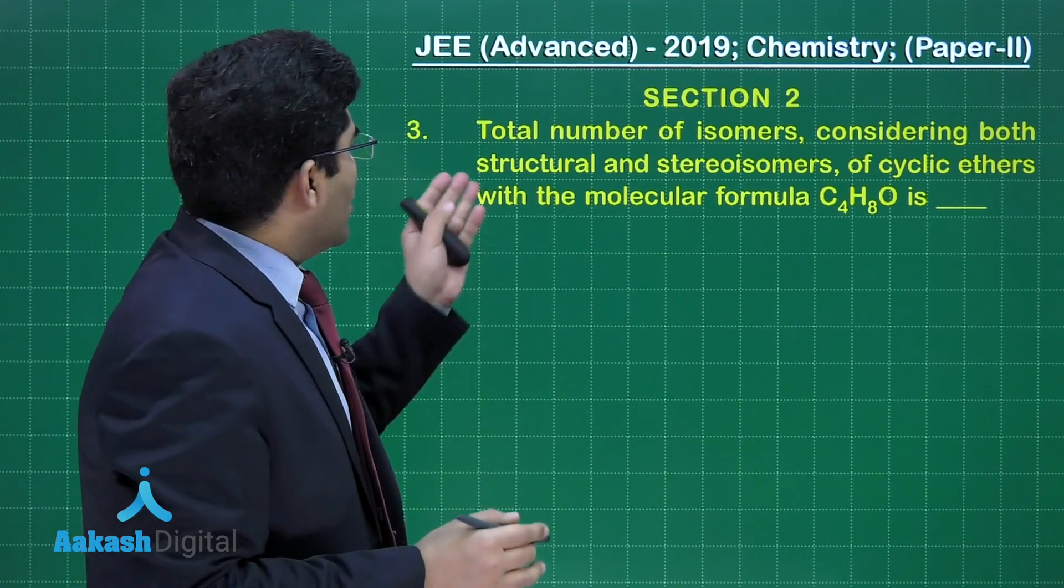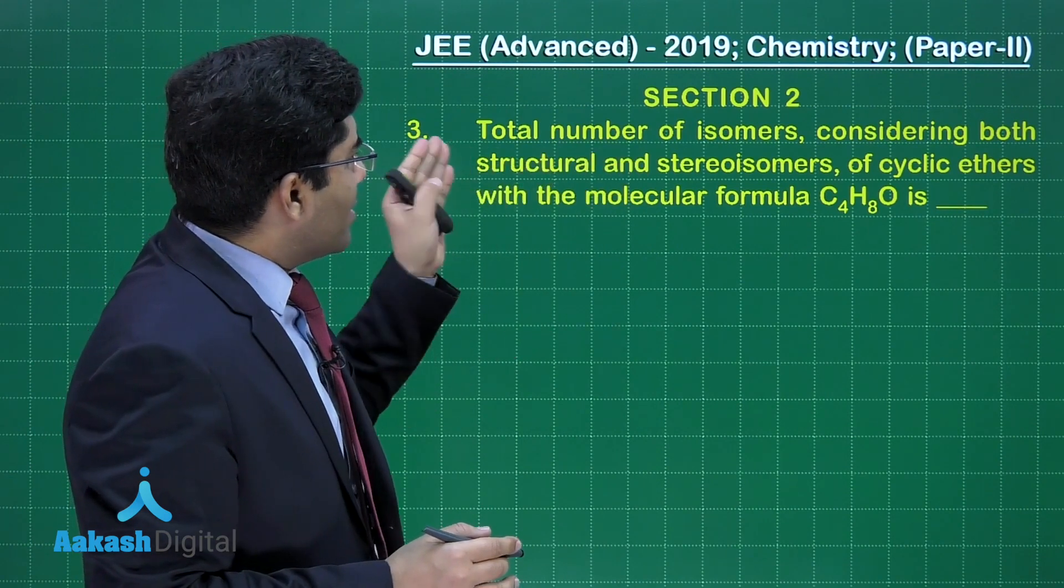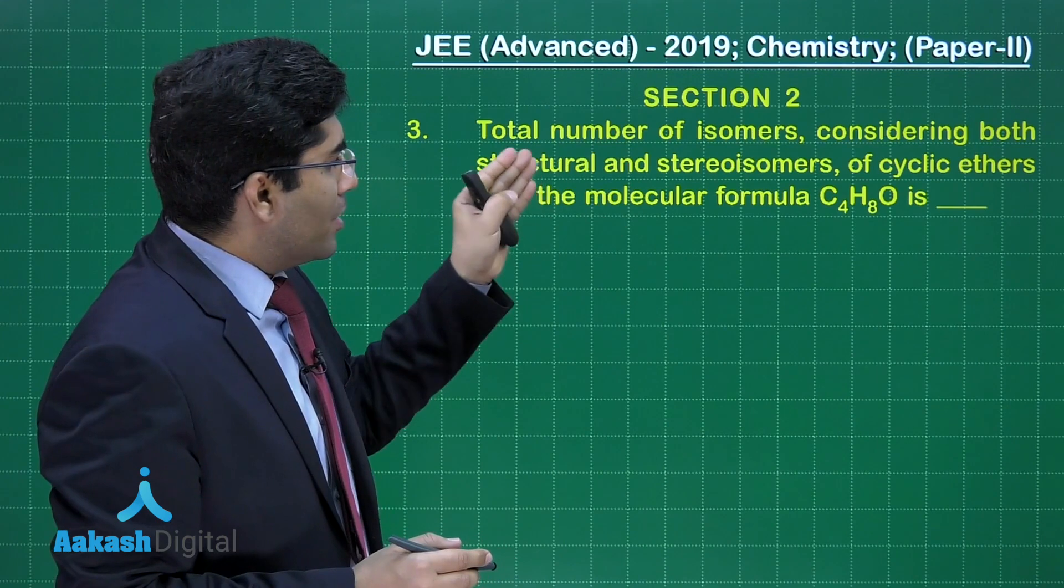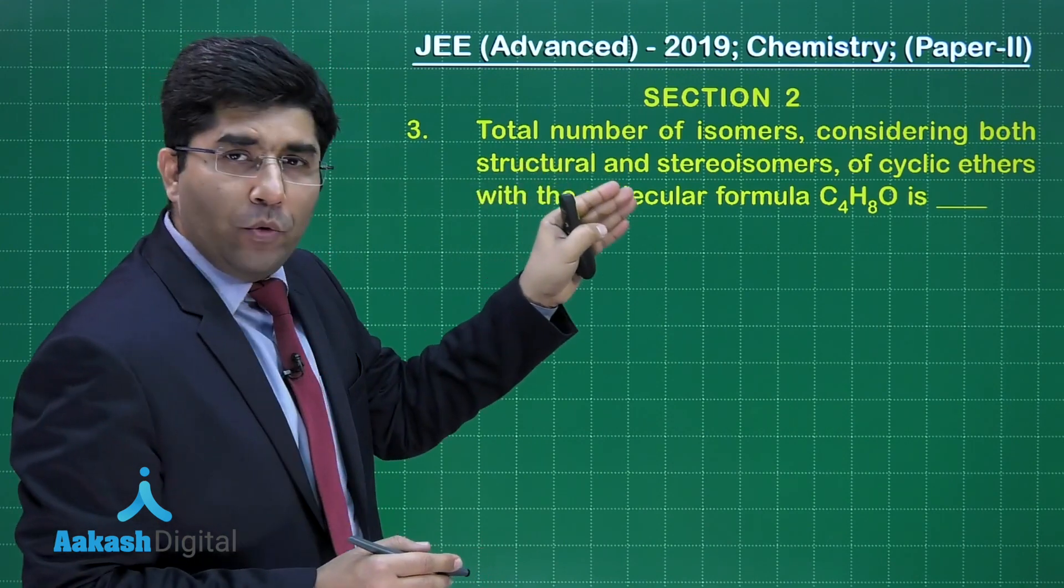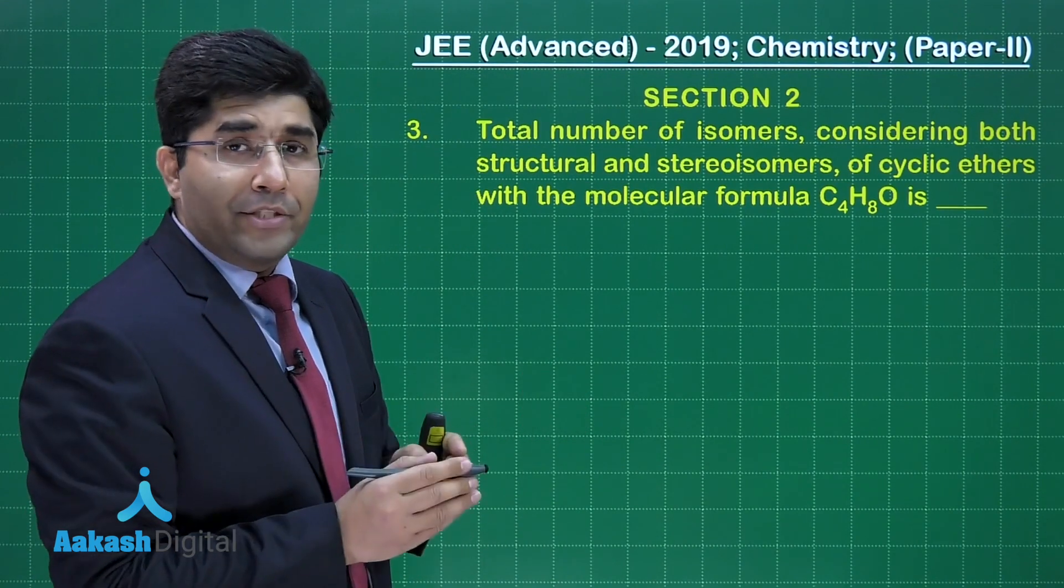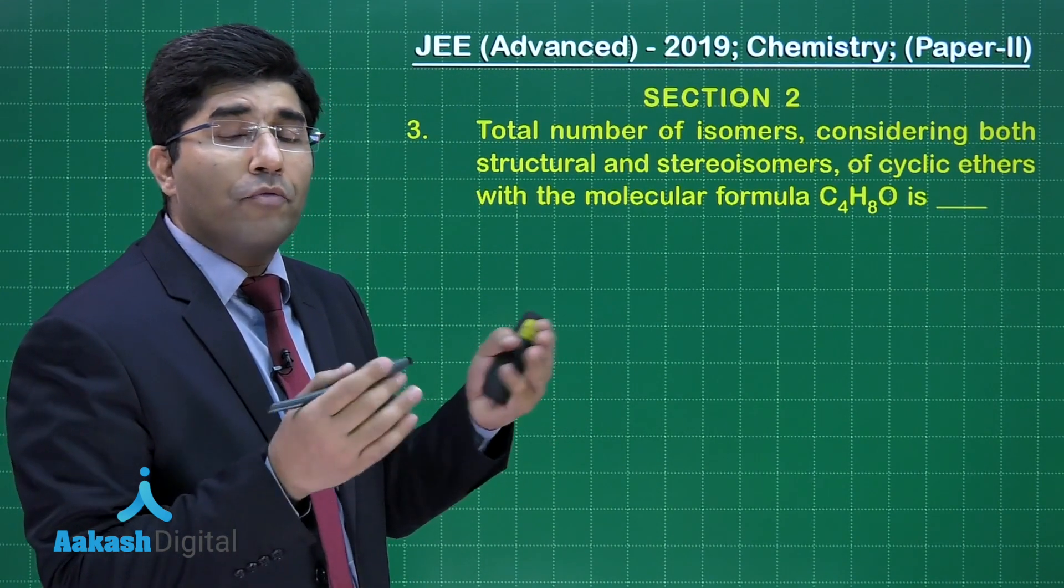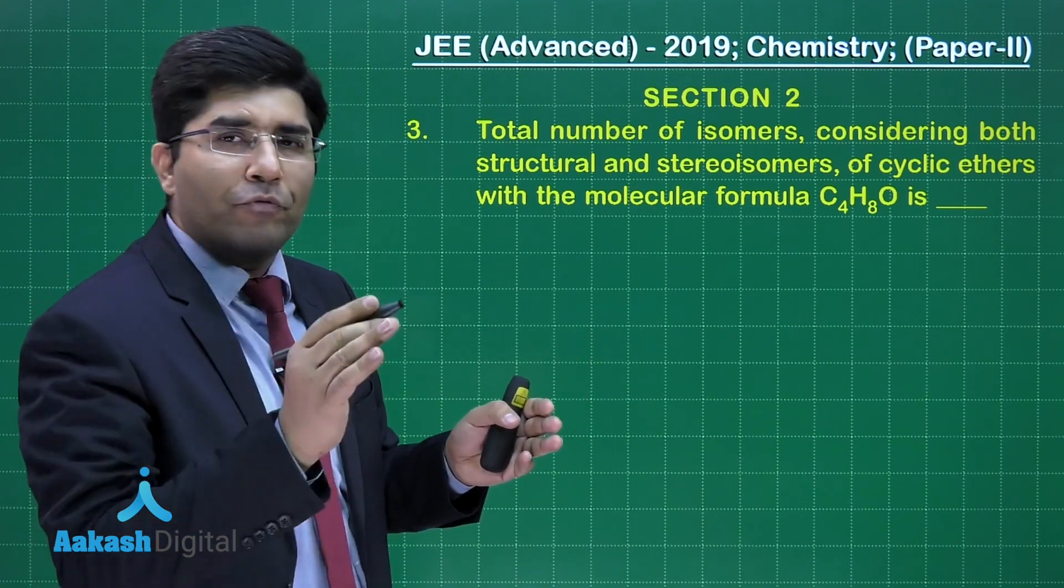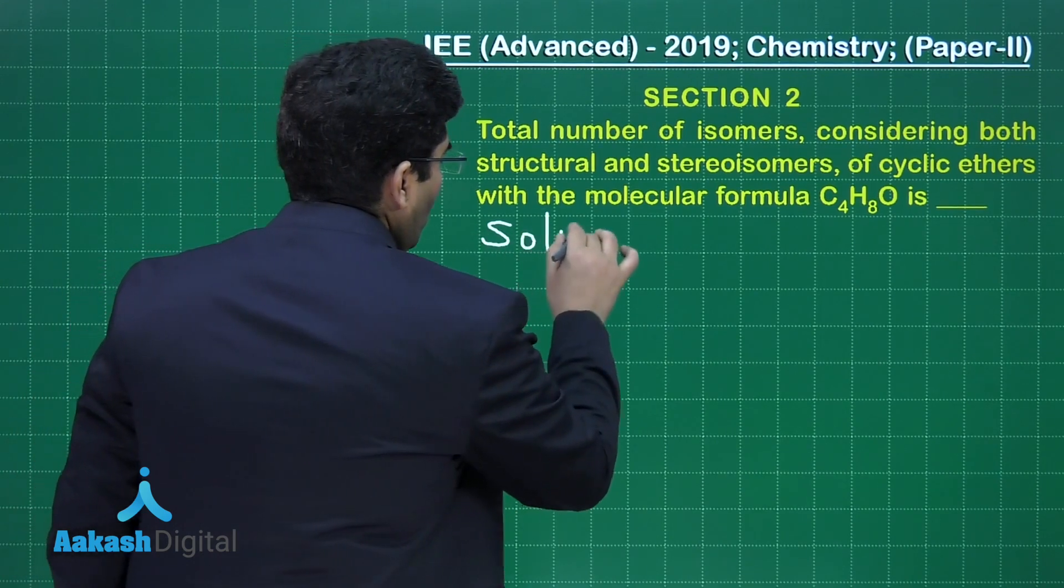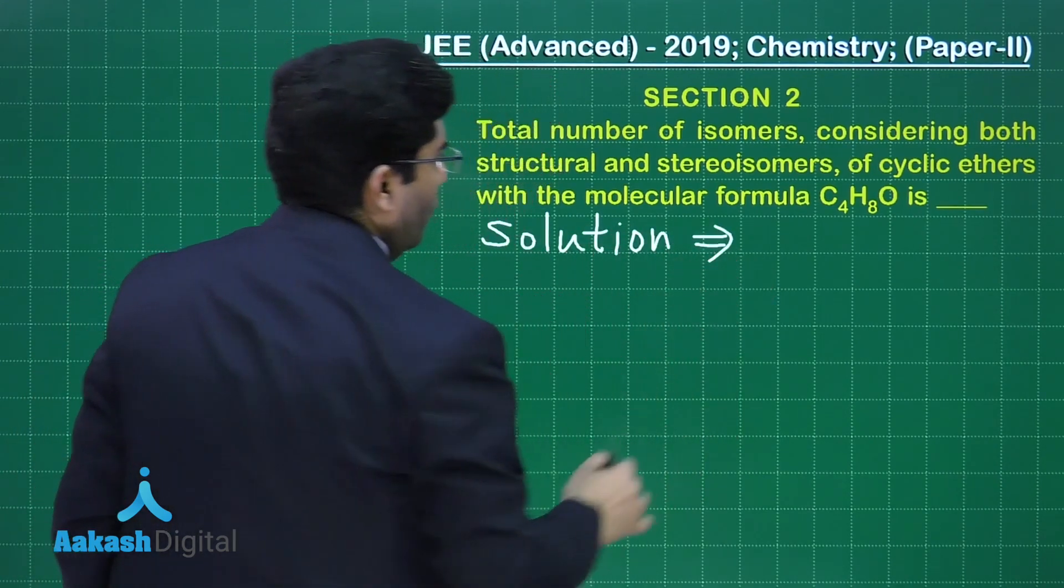In this question, it's asking: total number of isomers considering both the structural and stereoisomers of cyclic ethers with the molecular formula C₄H₈O is? So, we have to draw the structure because we do not have any formula to find out the number of isomers. We have to draw them. Let us move on to the solution.